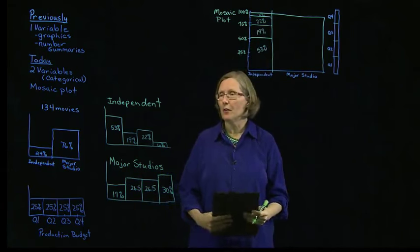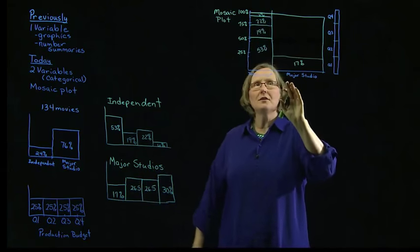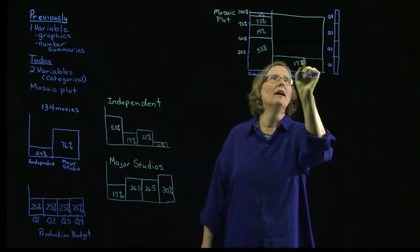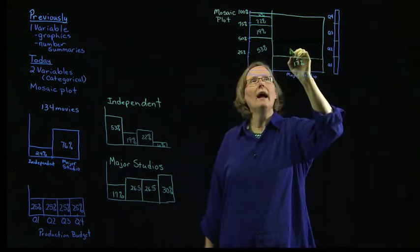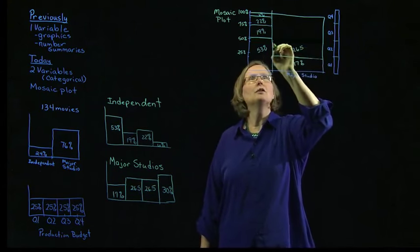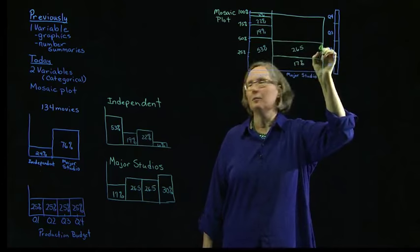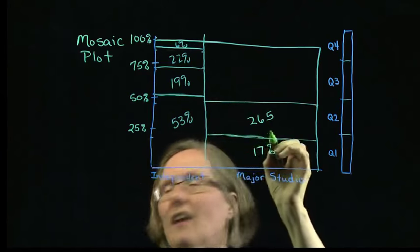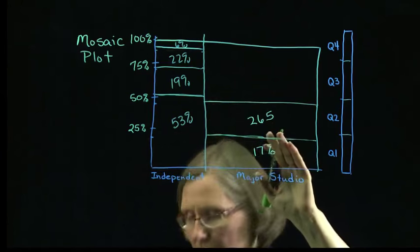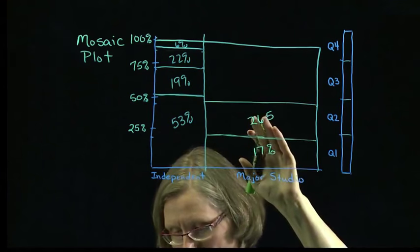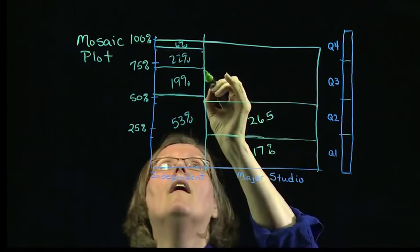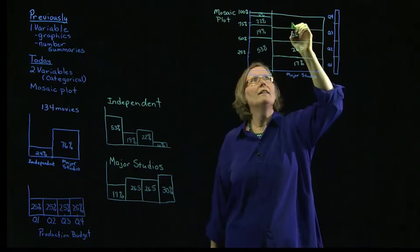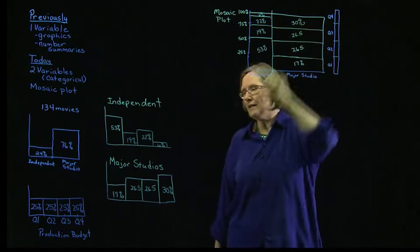Now we'll do the same thing for the major studios. We want 17% in the first quartile, then add 26.5%, which brings us up to 43.5%. The next one, we also want to add another 26.5—so 43 plus 26.5 gets us up to 70%. And that leaves our final 30% for the last quartile.